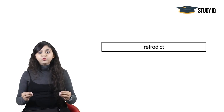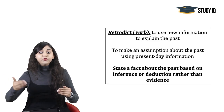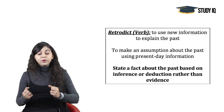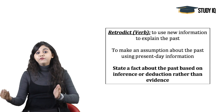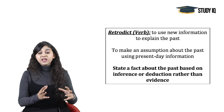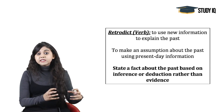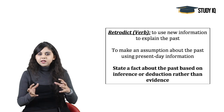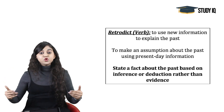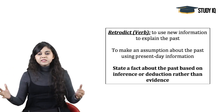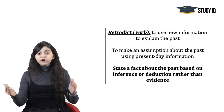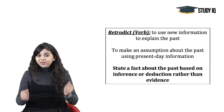Moving on to the next word: Retrodict. Retrodict ka arth hota hai — just like predict ka arth hai jab future ke baare mein kuch predict kar rahe hain, koi predictions kar rahe hain, koi assumptions laga rahe hain future ke baare mein — retrodict ka arth hota hai jab past ke baare mein koi assumptions laga rahe hain without proper evidence.